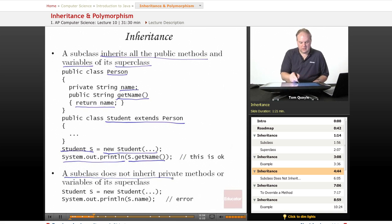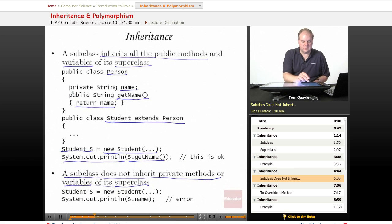A subclass, however, does not inherit any private methods or variables of the superclass. So in the superclass person, the string called name is a private variable.